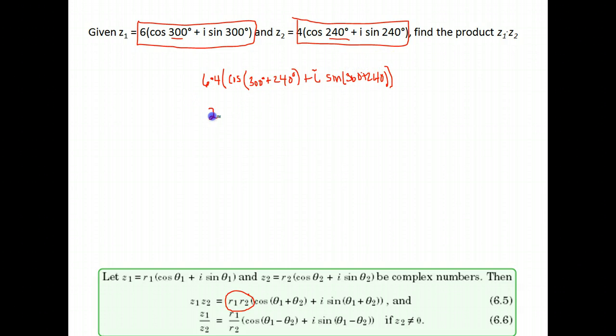Well 6 times 4 is 24, and that leaves us with cosine of 540 when we add our angles together. i sine 540 degrees.